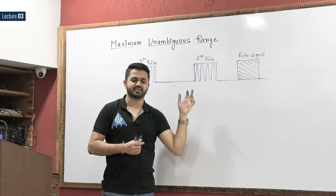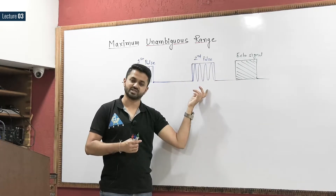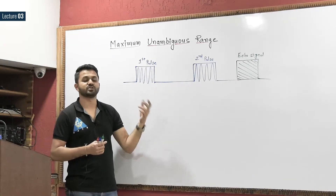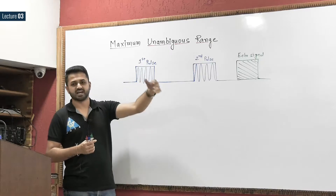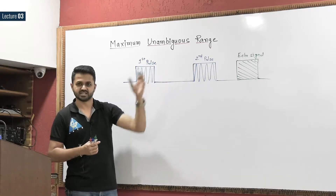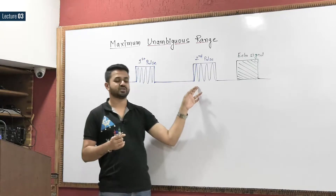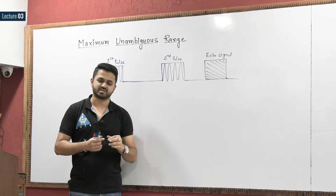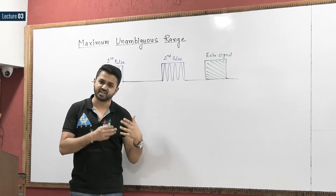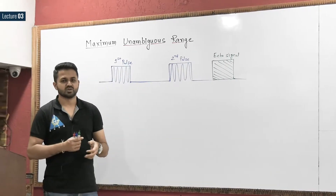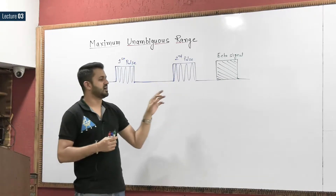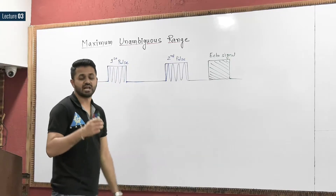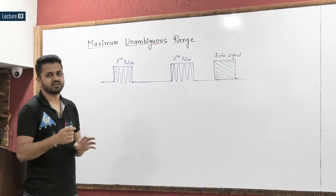Now there may be ambiguity: this echo signal could correspond to the second pulse or the first pulse. If it corresponds to the first pulse, the target is very far from the radar station. If it corresponds to the second pulse and we are immediately getting the echo, the target is very close to the radar station. So there will be confusion in calculating the range of the target.